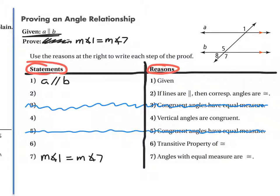Now let's fill in the rest of our statements. They tell us statement two is because if lines are parallel, then corresponding angles are congruent. Looking at our diagram, which corresponding angles should they be talking about? Corresponding angles form an F shape — angle 1 and angle 5 form an upside-down and backwards F. So we know that angle 1 is congruent to angle 5. That is our corresponding angles postulate.